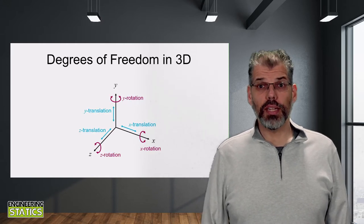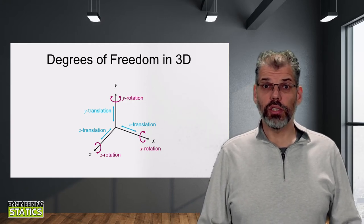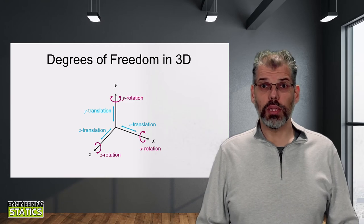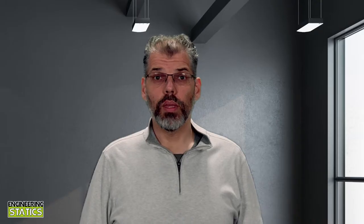In 3D space, we have six possible degrees of freedom, three translations and three rotations. And the motion of any body in 3D space can be described by a combination of these three translations and three rotations. We can thus easily evaluate the appropriate reaction forces and moments that can act at a support that we remove in our free body diagrams by looking at the motion that support would have restricted.